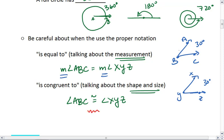And the way we mark congruent angles is with this arc. So if they both have a single arc, they're congruent. If they both have a double arc, they're congruent.